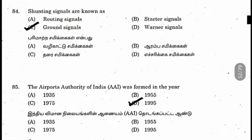Question 84: Shunting signals are known as what? Shunting signals are ground signals. They are used for joining the engine to coaches or joining coaches with other coaches. The signal is given so the engine slows down and stops for this process. Routing, starter, and warner signals are all based on the starting and stopping of the train, not for shunting operations.